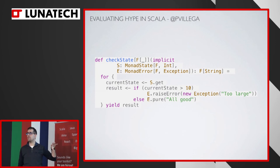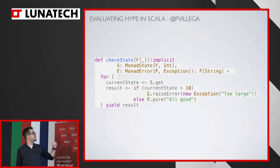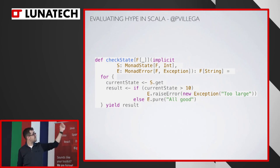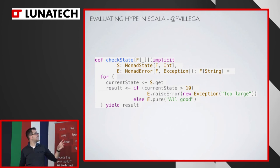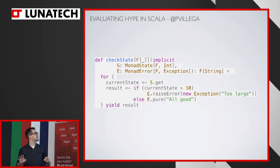With MTL, instead of building that transformer stack, you say through implicits that F is also something that has a state — a MonadState — and also something that has error. When you want to work with state, you say for MonadState get me the value, and when you want to work with errors, you raise an error. The beauty is that everything works in the context of F, so you're just flat-mapping on F without having to lift into each transformer layer.